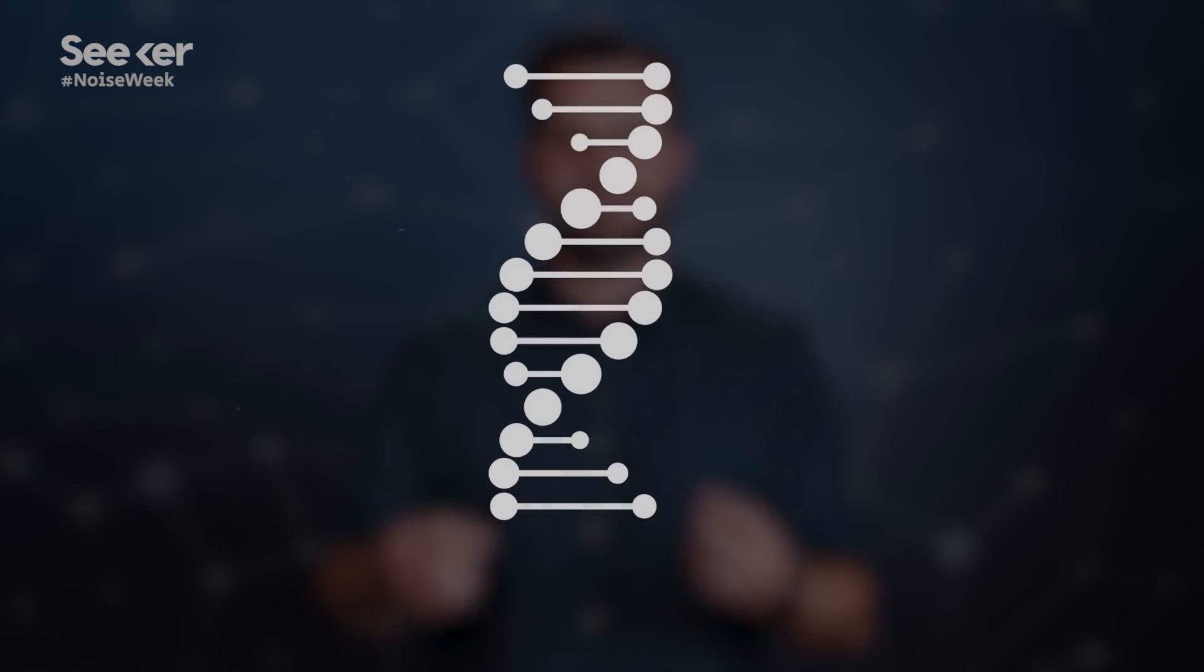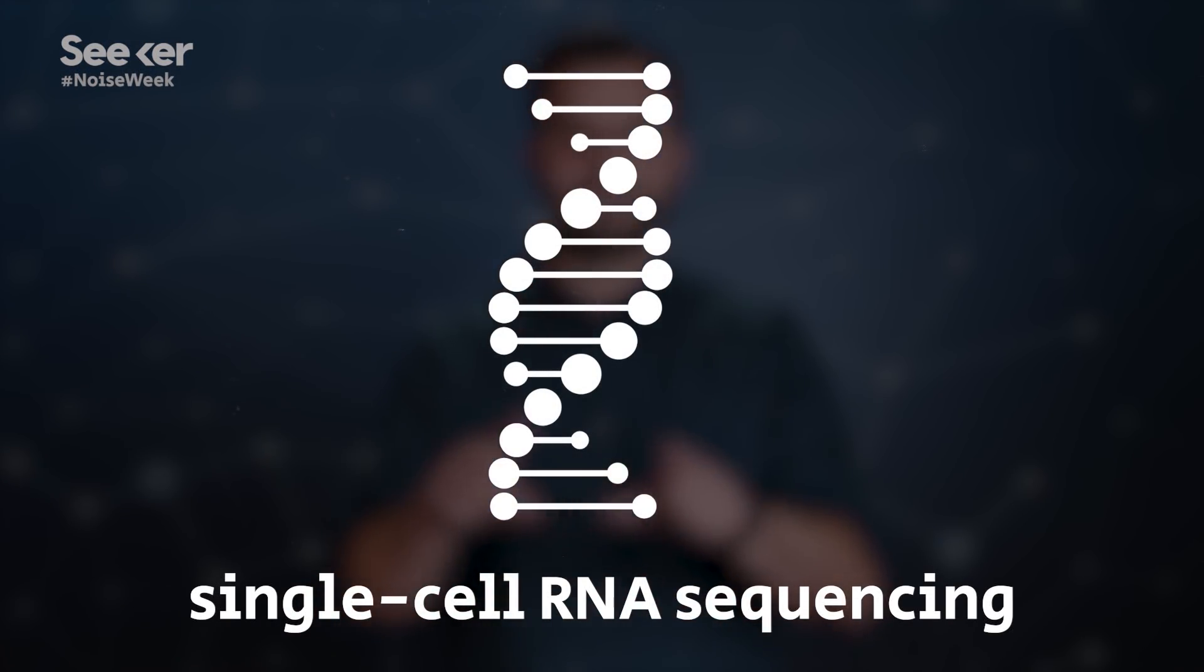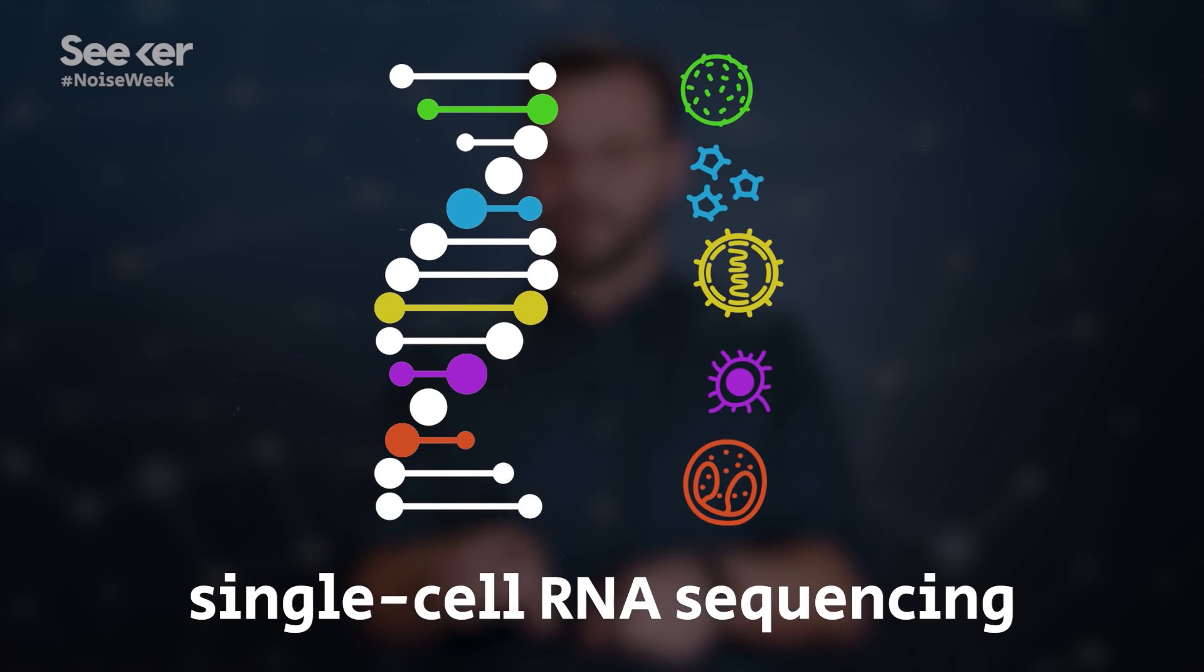Now a new technique called single-cell RNA sequencing lets scientists read out which parts of DNA are actually getting copied to be used by individual cells. It's like we're reading their little minds and seeing what they want to be.